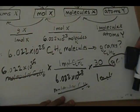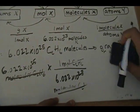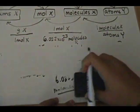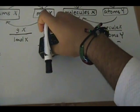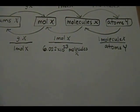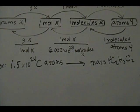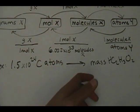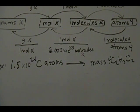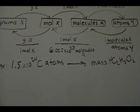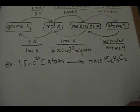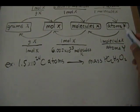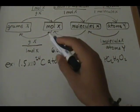Let's do one more example. For this final example, we have 1.5 times 10 to the 24th carbon atoms. What does that translate to in terms of the mass of acetic acid, HC₂H₃O₂? We're going to be very systematic in our approach. If we have a sample of carbon atoms from acetic acid, what is the mass of that acetic acid? We have two intermediate steps.